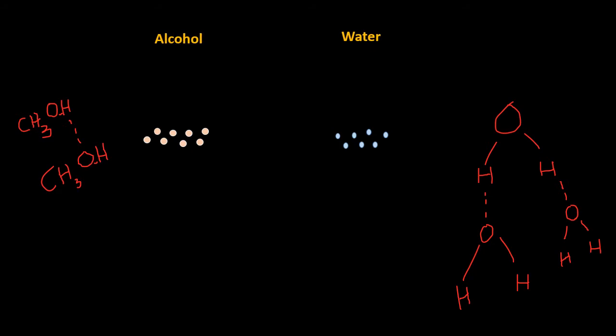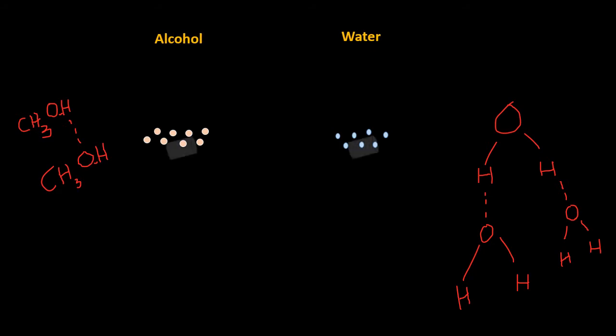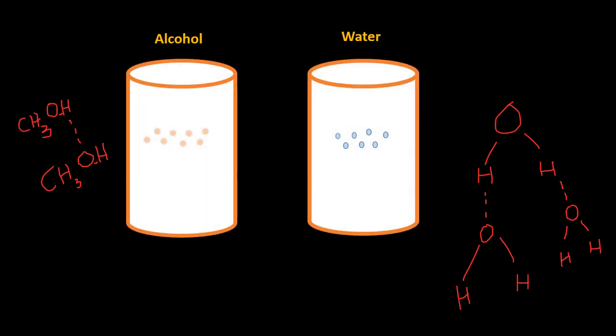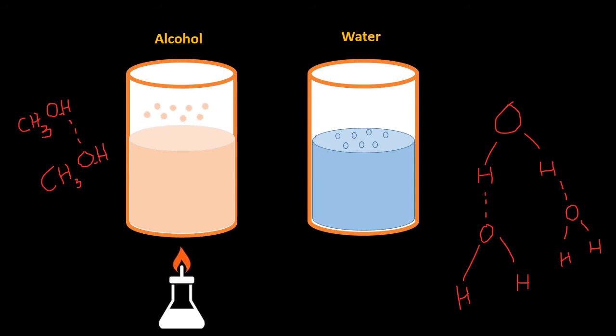Let us take an example of alcohol and water. Now in case of alcohol, alcohol boils at 78 degrees, while water boils at 100 degrees. Do you know why there is a difference in their boiling points?